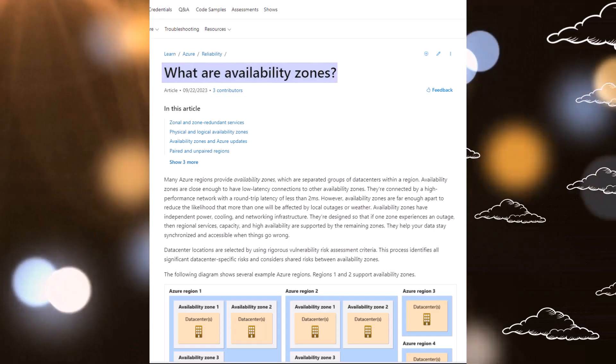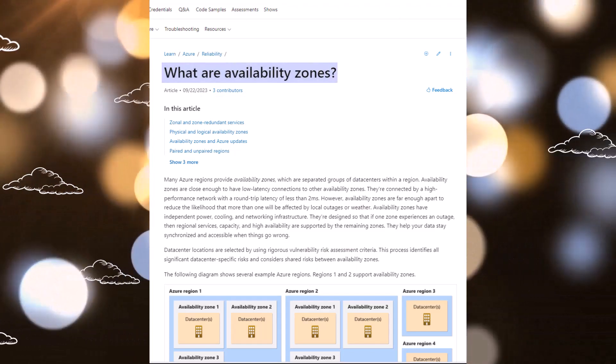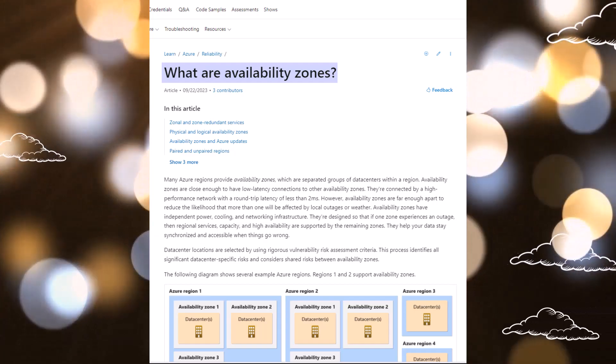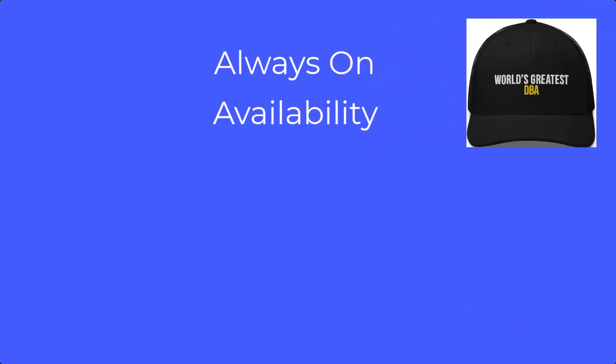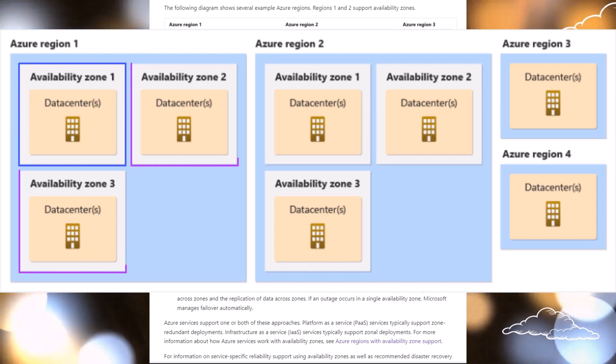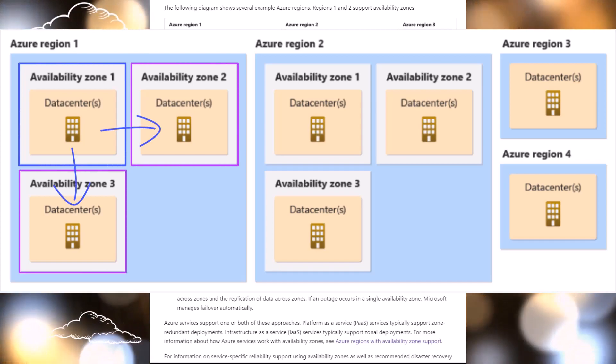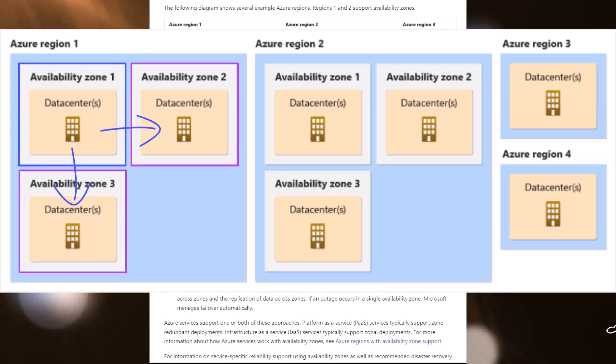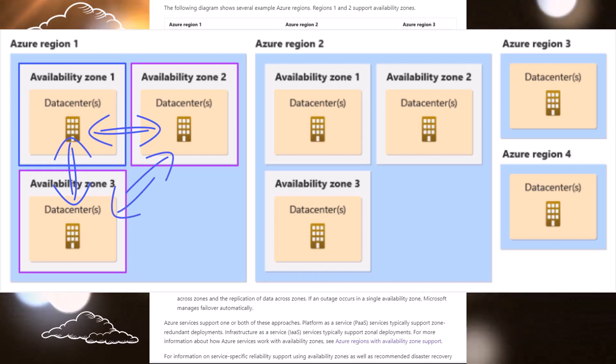What we're doing today is starting with some of our documentation. I was working with a customer and we were talking about high availability, and naturally in Azure we have to talk about availability zones. Availability zones are an incredible concept and an incredible feat of engineering. Put your DBA hat on — we're talking always on availability groups for your Azure region. We're going to make this look like an always on availability group where availability zones are replicating to each zone.